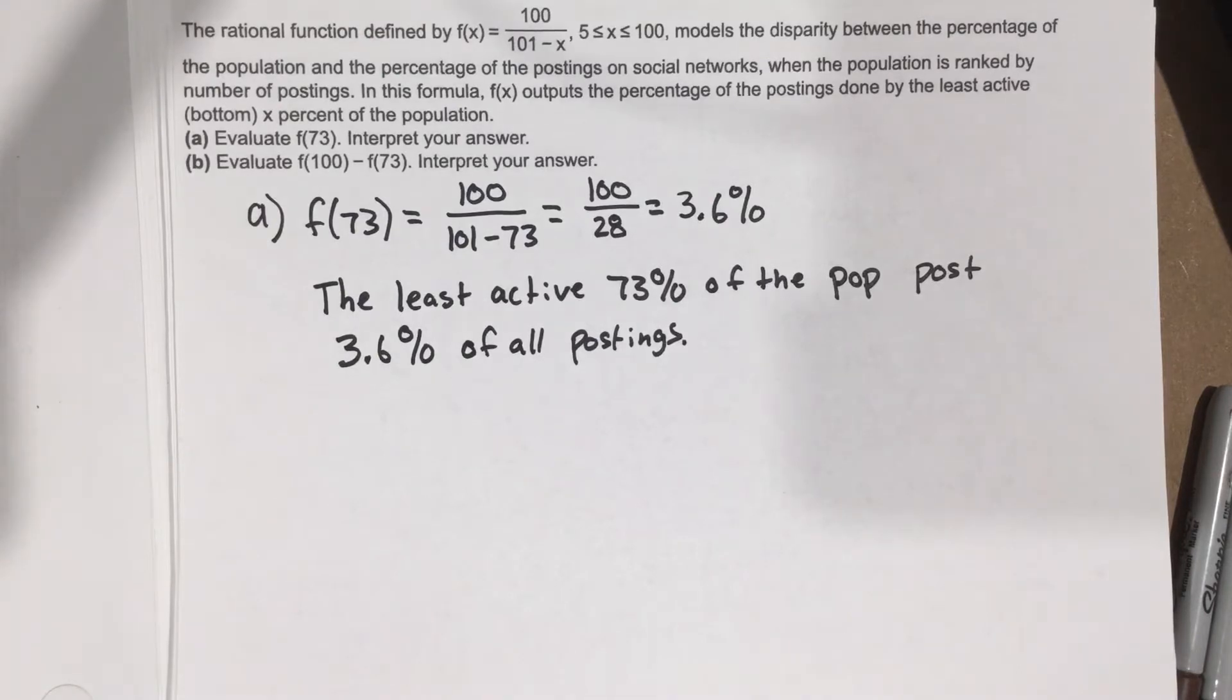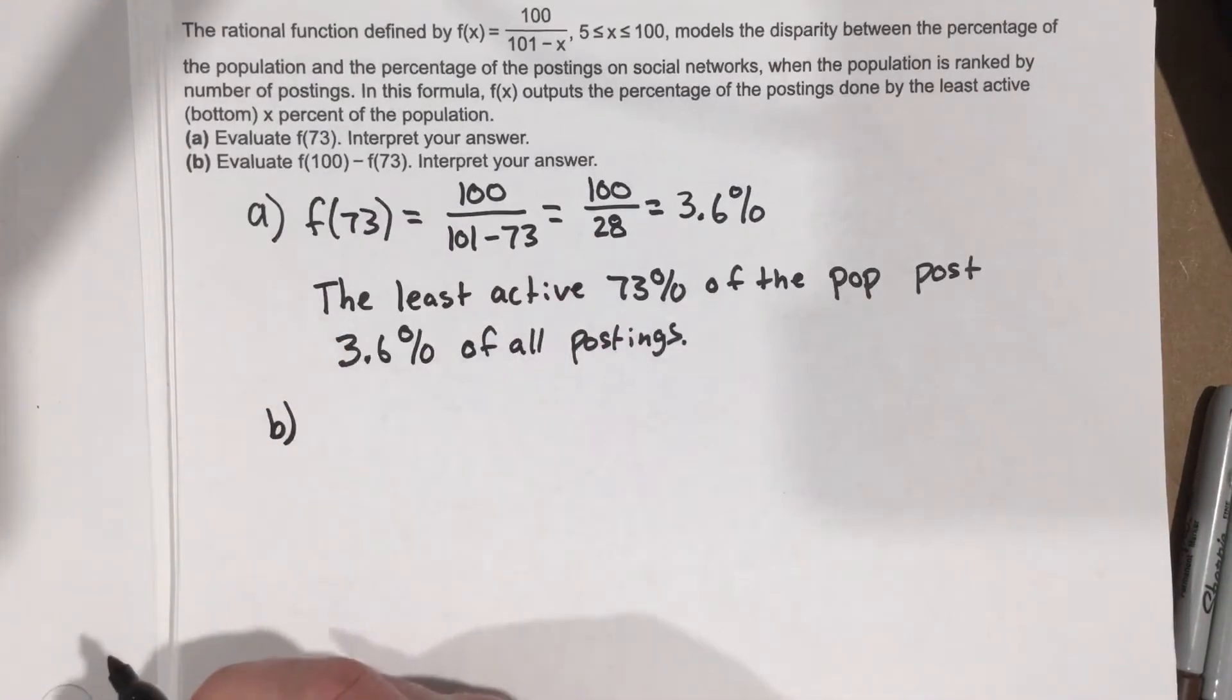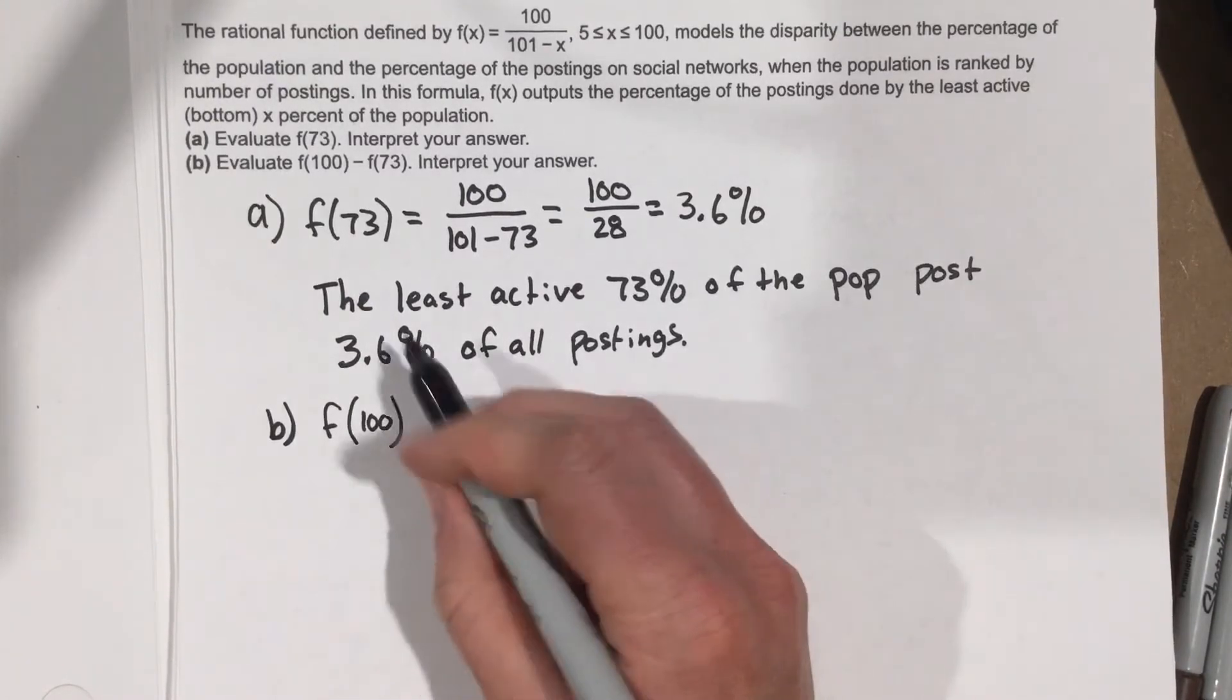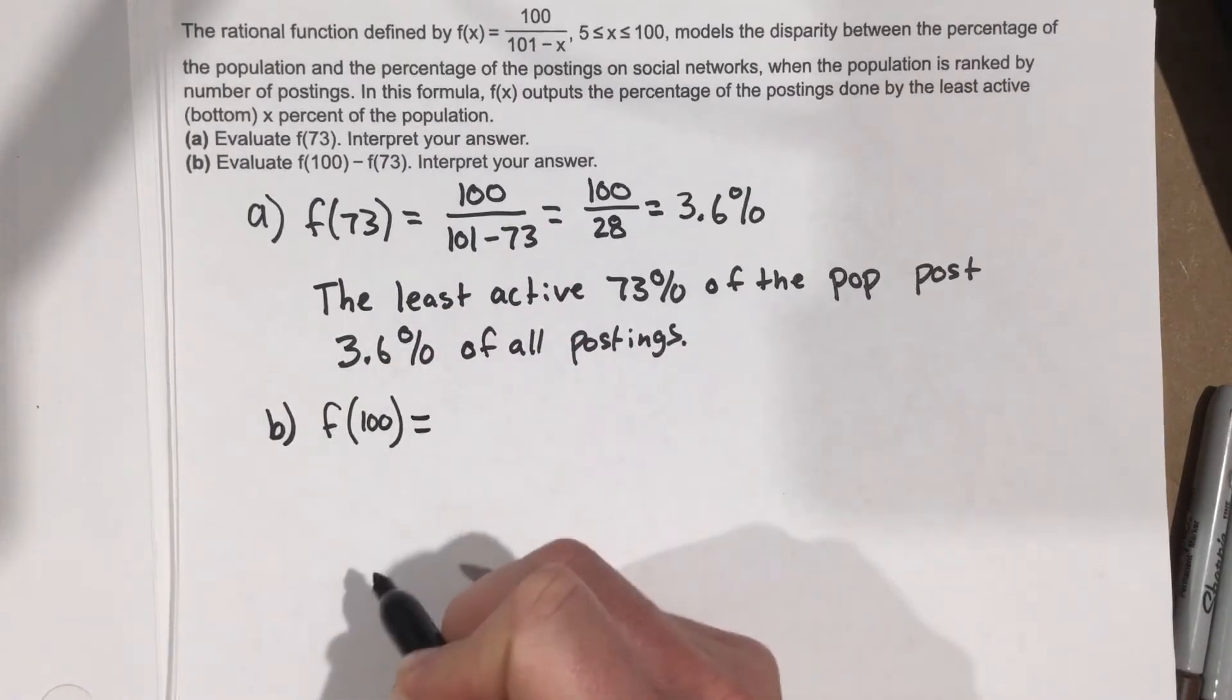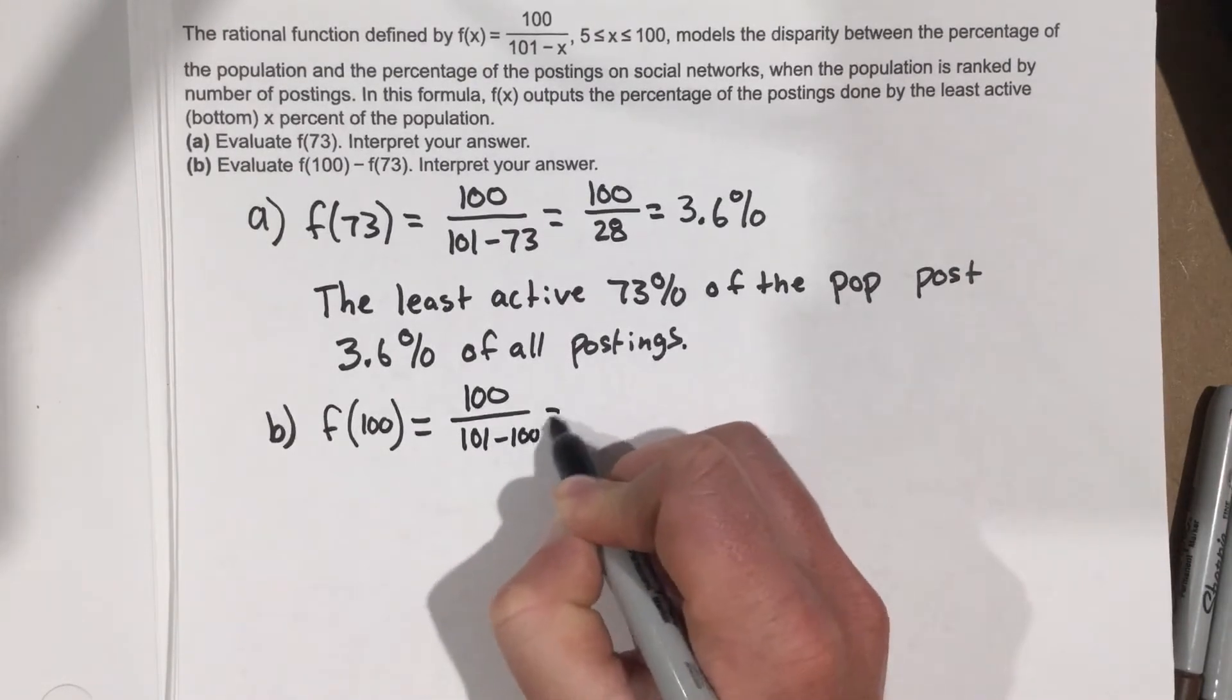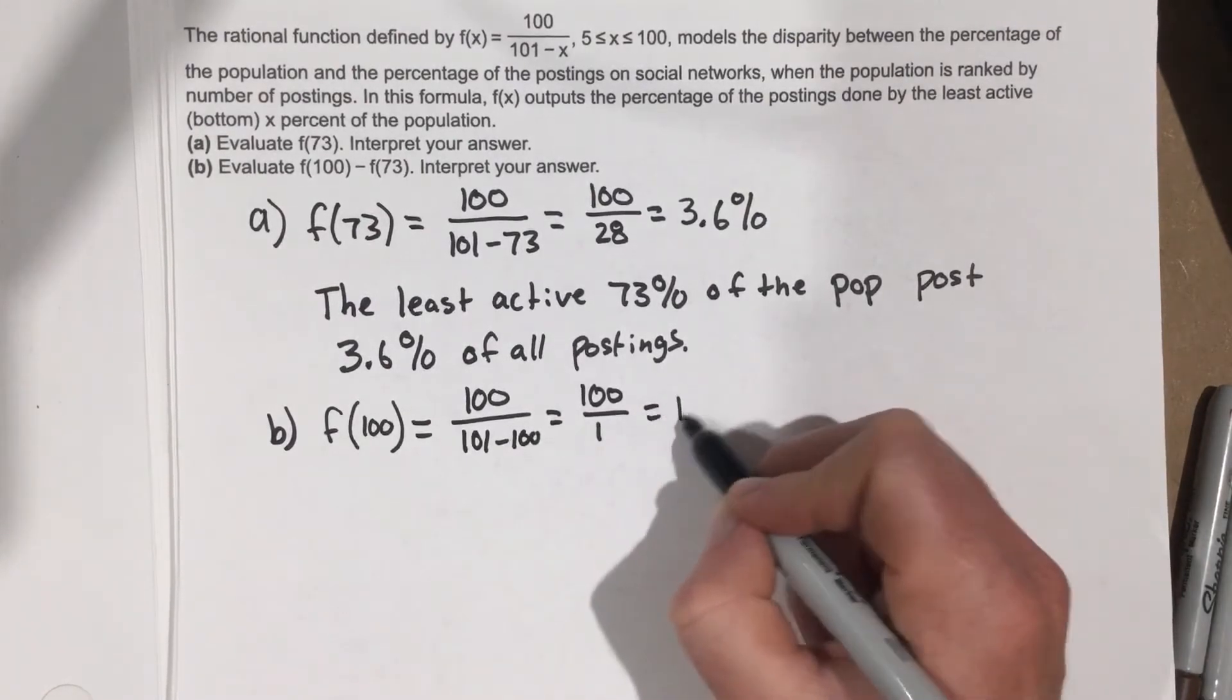Now part B says to evaluate f(100) minus f(73). So f(100) equals 100 over 101 minus 100, which gives you 100 over 1, which gives you 100%.